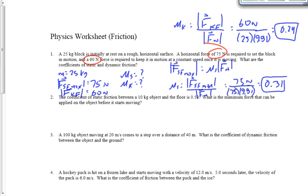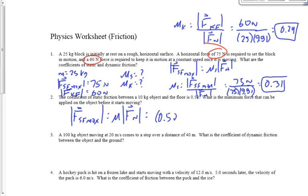Question number two — this one is a little bit easier. The coefficient of static friction is 0.50. What's the max force that can be applied before it starts moving? FSF max equals μ times the normal force: 0.50 times the normal force, which is M times g — 10 times 9.81 — giving us 49 Newtons.